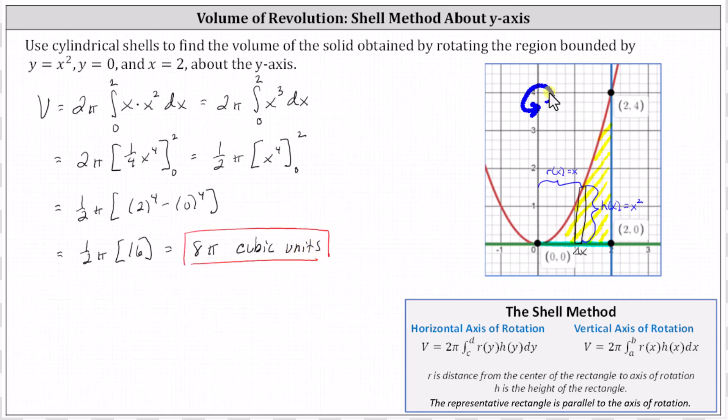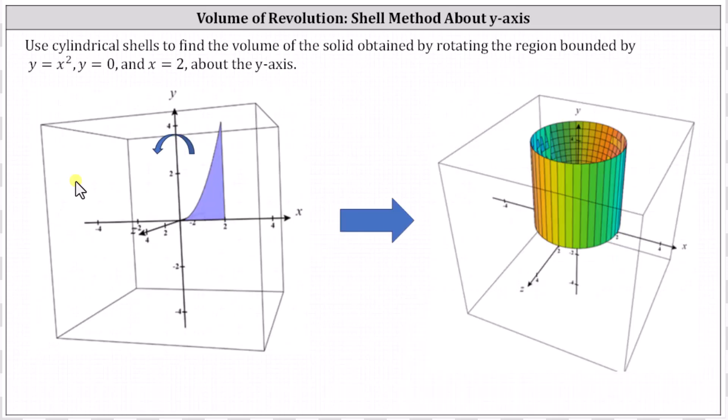This is the exact volume of the solid when the bounded region R, shown here on the left, is rotated about the y-axis producing the solid shown here on the right. I hope you found this helpful.